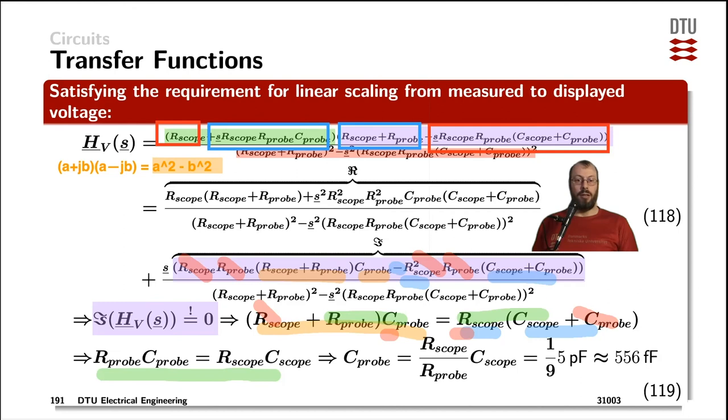And finally, the only unknown here is C probe, that we can solve that equation for, and put in all the numbers that we have derived before, and then we can see that the ratio of the resistors is 1 divided by 9. Again, the scope capacitance was defined to be 5 picofarad, that means we end up with the required probe capacitance of 550 femtofarad.